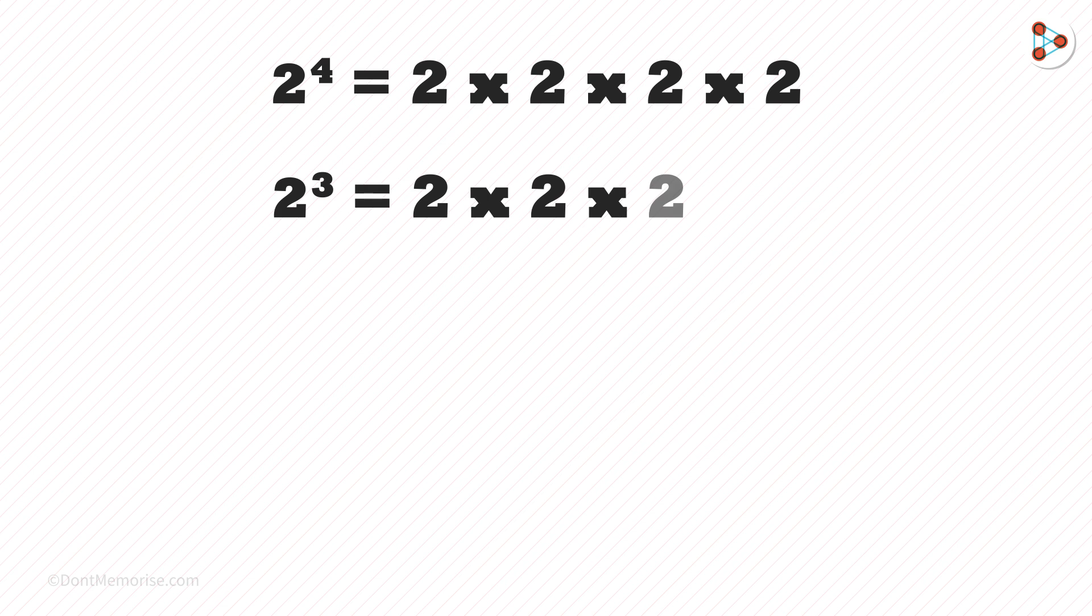There is an easy method to do this. 2 to the power 4 is 2 multiplied by 2 multiplied by 2 multiplied by 2. Similarly, 2 to the power 3 is 2 multiplied by 2 multiplied by 2.